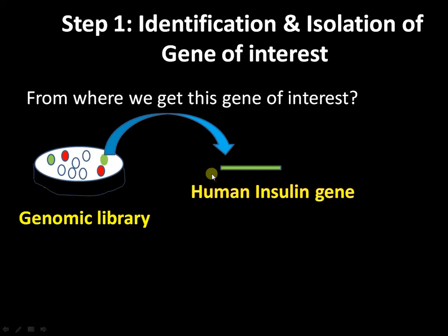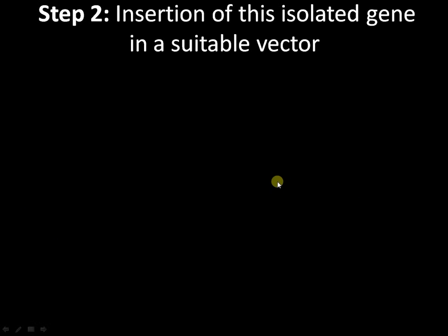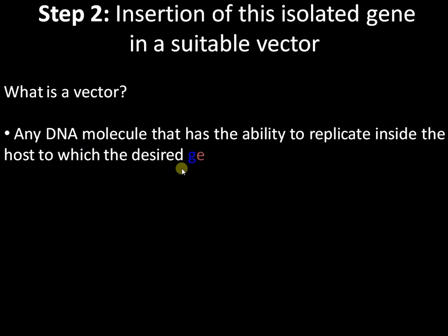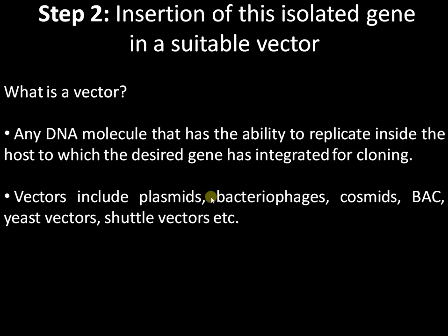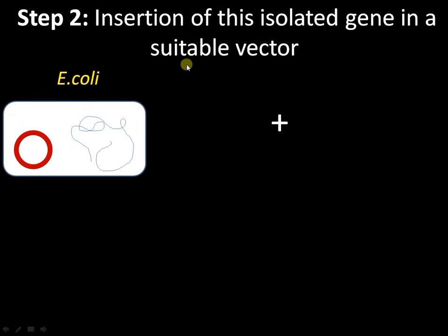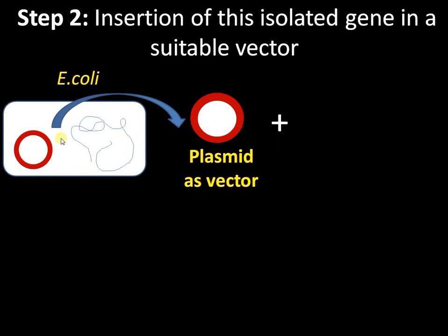Step 2: I need to insert this desired gene — the insulin gene — into a suitable vector. First we need to know what a vector is. A vector is any DNA molecule that has the ability to replicate inside the host into which our gene of interest has been integrated. Cloning vectors include plasmids, bacteriophage, BAC, YAC, etc. You can refer to our video on gene cloning vectors for more. Most often we use a plasmid as our vector. A plasmid is extrachromosomal DNA present in bacteria. Here I have isolated a plasmid from an E. coli bacterium.